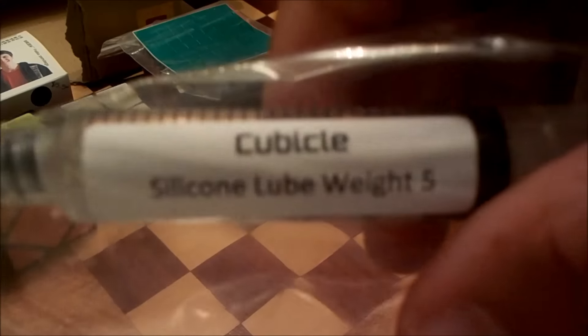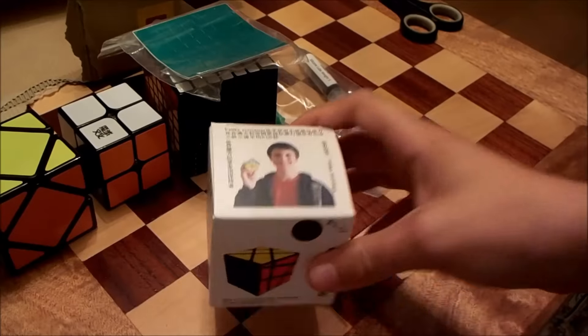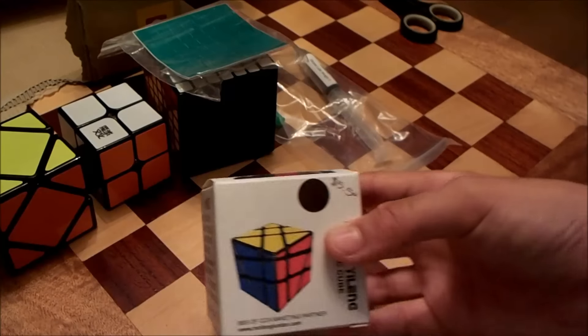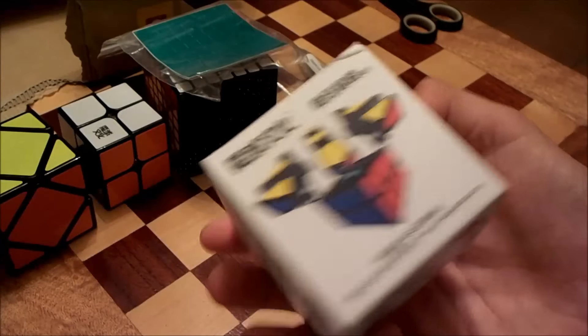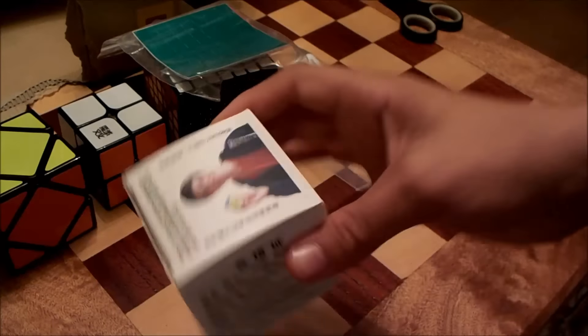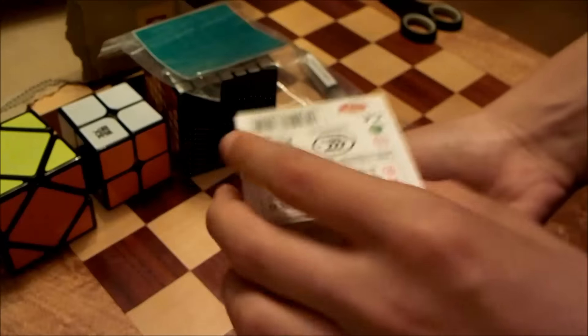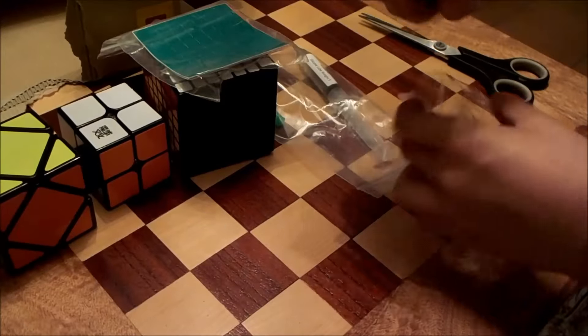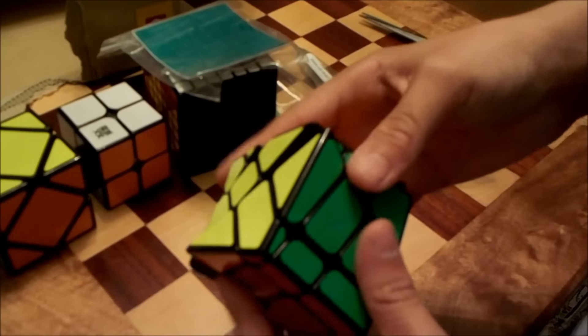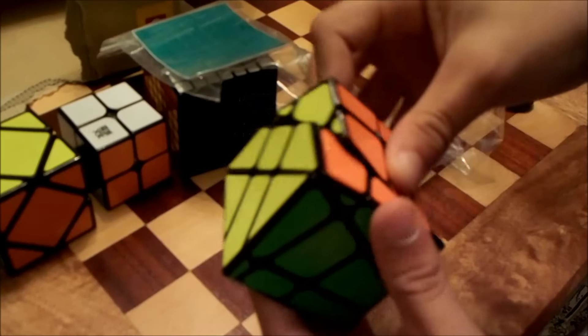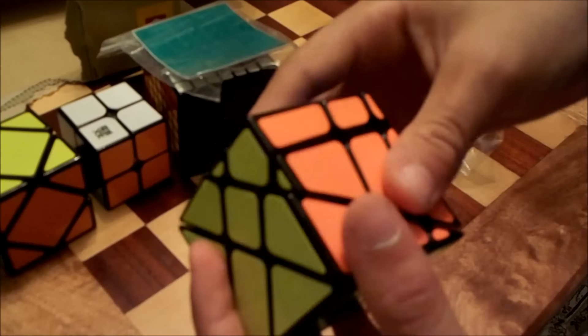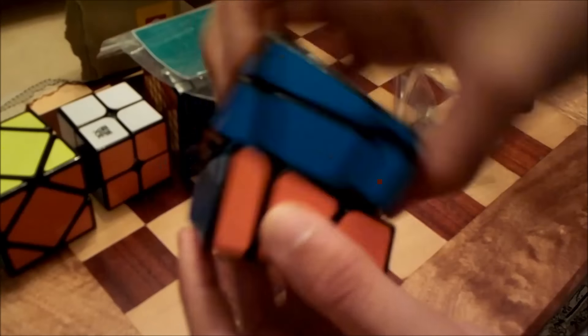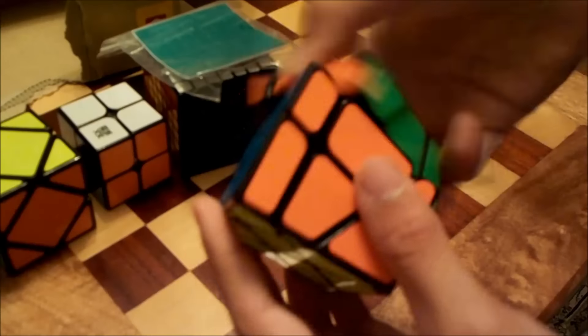The final cube that I've got in this unboxing is the Crazy Fisher or Crazy Yilang. Or something like that. But anyway, it's a 3x3 shape mod. Which I've heard is pretty cool. Here we have the Crazy Yilang or Crazy Fisher. Okay, that's a nice, smooth feeling for a shape-shifting cube. Feels a bit like a normal Moyu cube.